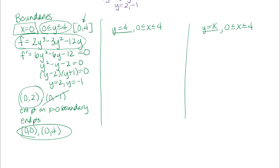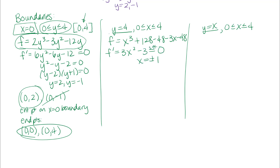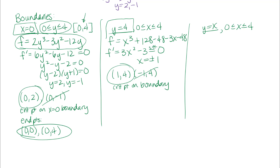For the next boundary y = 4, I substitute y = 4 everywhere in the original function, leaving a single-variable function in x. Taking the derivative and setting it equal to zero gives x = ±1, corresponding to the points (1, 4) and (−1, 4). Only (1, 4) is in the region; (−1, 4) lies to the left of the region and is discarded. So (1, 4) is the critical point on this boundary, and I also need to consider its endpoints.